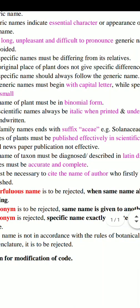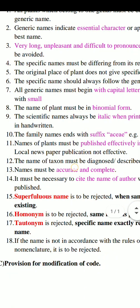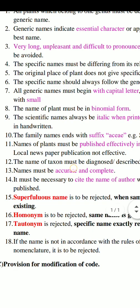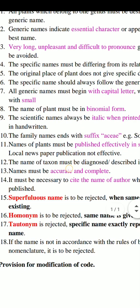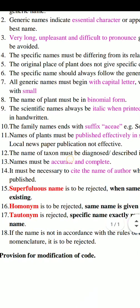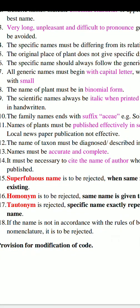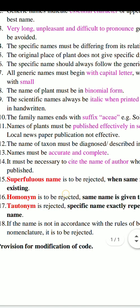Rule 8: The name of the plant must be in binomial form — meaning two names are essential. Just like our names have three parts, for example Savita Tukaram Patil, plant names use two, such as Aponogeton satarensis, Mangifera indica, etc.